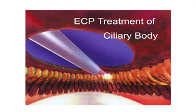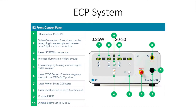ECP also uses diode laser. The control panel for ECP looks like this. There is a setting to increase power, typically set at 0.25 watts. We also have the ability to control the duration, which we typically set at continuous. You can also control the light as well as the intensity of the aiming beam.